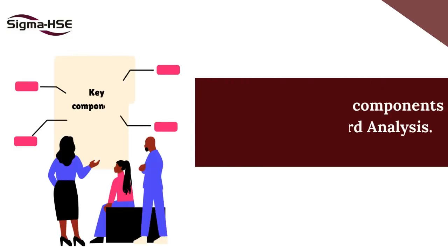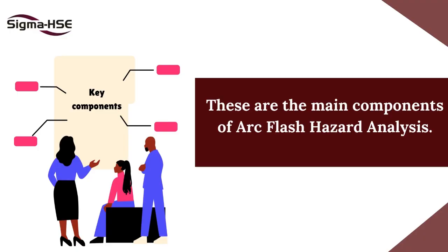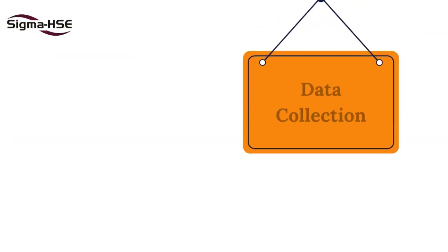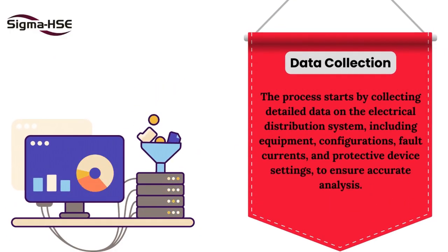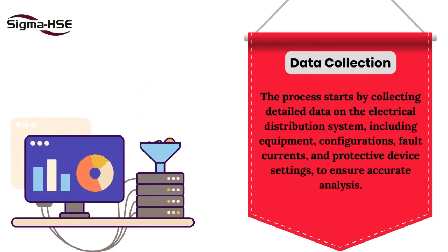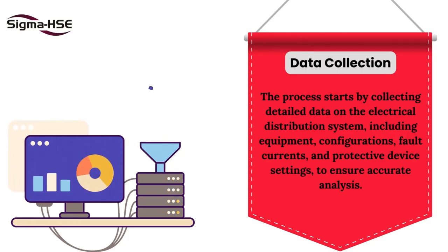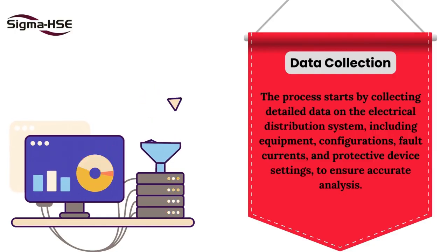These are the main components of arc flash hazard analysis. Data Collection: The process starts by collecting detailed data on the electrical distribution system, including equipment, configurations, fault currents, and protective device settings, to ensure accurate analysis.